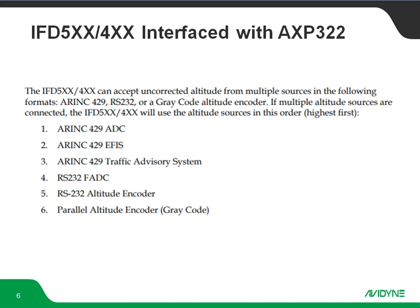It should also be noted that the AXP322 does not have its own connection for altitude input. That altitude input is going to come via the IFD on that RS-232. So you've got to make sure that the IFD is receiving certified pressure altitude from some source. Here's the list of sources the IFD can take and the priority behind them in case you've got more than one altitude source. ARINC 429 ADC or EFIS is the highest priority, all the way down to gray code input if that's all you've got.